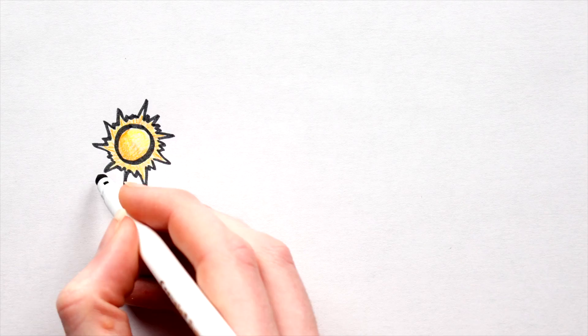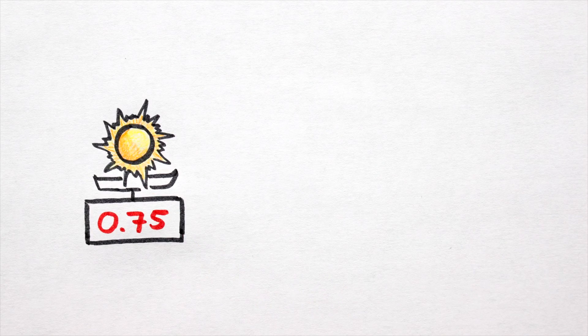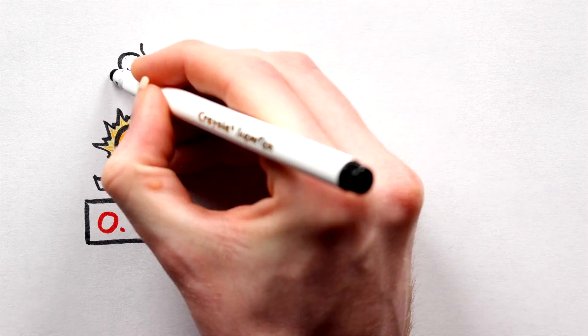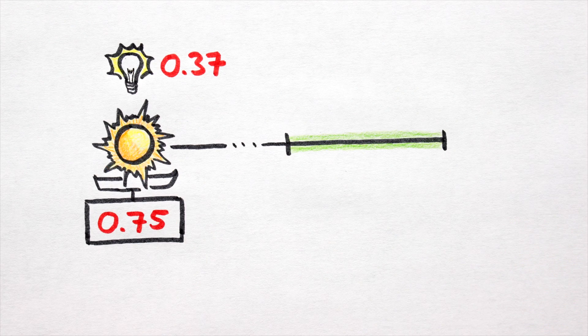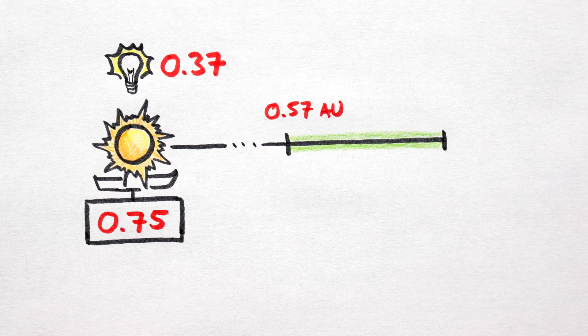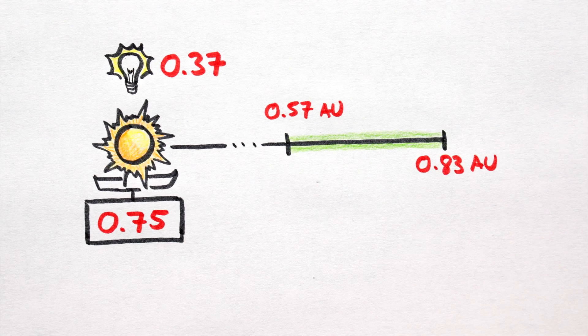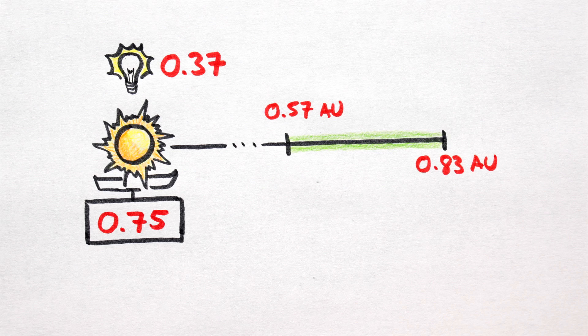So here's our star. It has a mass of 0.75 solar masses, it's 0.37 times as luminous as our own sun, and importantly, its habitable zone extends from 0.57 AU out to 0.83 AU. Unsure where I'm getting these figures from? No worries, click the links on screen for a guide to constructing stars.